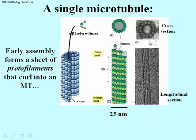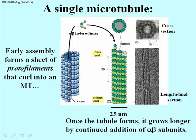If you look in cross-section at a microtubule — shown in cartoon item B and as an electron micrograph in item D — you can count 13 tubulin subunits in that cross-section. All microtubules in eukaryotes are a ring of 13 tubulin subunits, and again you see in longitudinal section that it's 25 nanometers in diameter. The alpha-beta heterodimers continue to add even after the microtubule has fully formed, growing longer by the addition of more alpha-beta subunits.